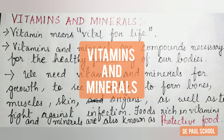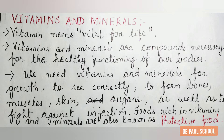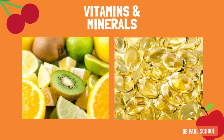The next topic is vitamins and minerals. Vitamins means vital for life. Vitamins and minerals are compounds necessary for the healthy functioning of our bodies. We need vitamins and minerals for growth, to see correctly, to form bones, muscles, skin, and organs, as well as to fight against infection. There are many types of vitamins: vitamin A, vitamin B, vitamin C, vitamin D, vitamin E, and vitamin K.